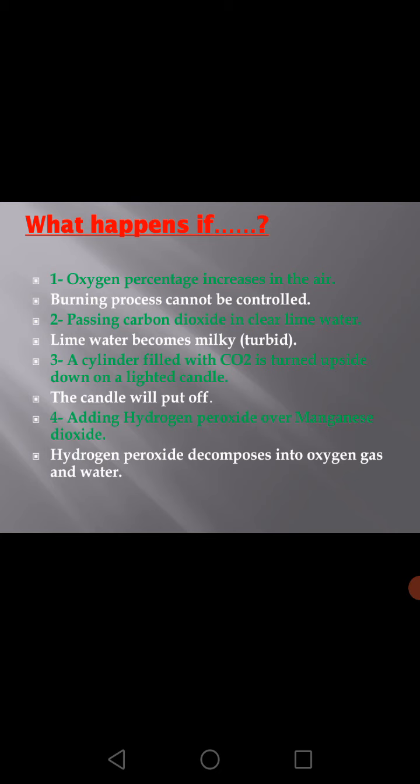What happens if oxygen percentage increases in the air? If oxygen percentage increases, the burning process cannot be controlled and it will be fast. Passing carbon dioxide in clear lime water — it becomes milky or turbid. A cylinder filled with carbon dioxide is turned upside down on a lighted candle — the candle will be put off, because carbon dioxide doesn't burn and doesn't help in burning. Adding hydrogen peroxide over manganese dioxide — it will decompose into oxygen gas and water. This is the preparation of oxygen in the lab.